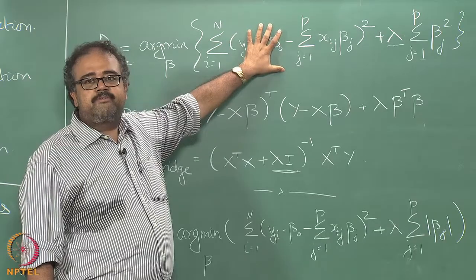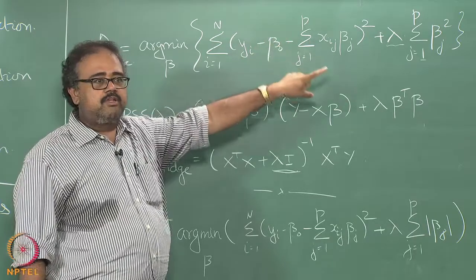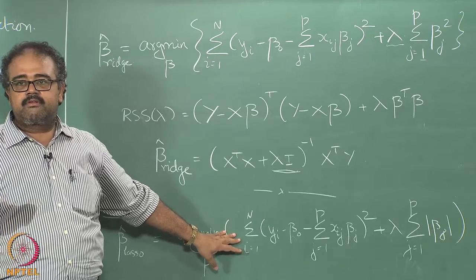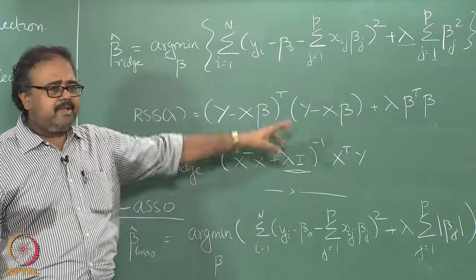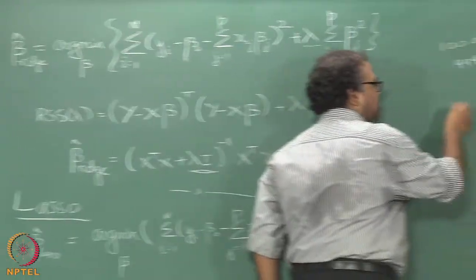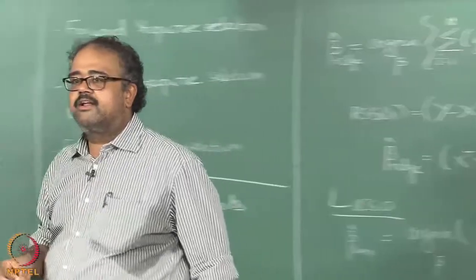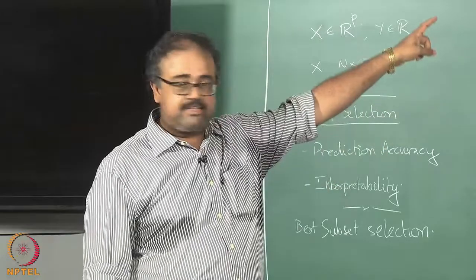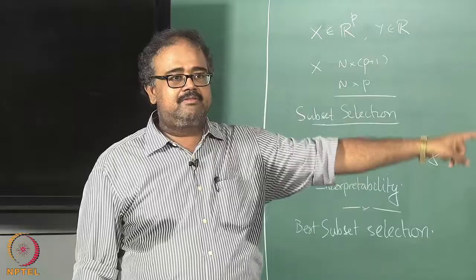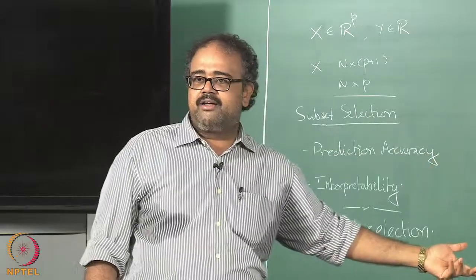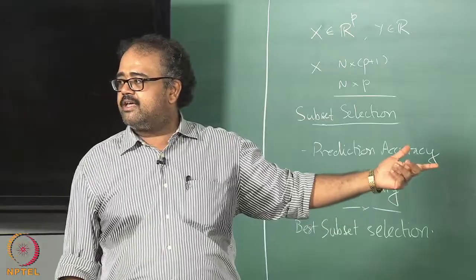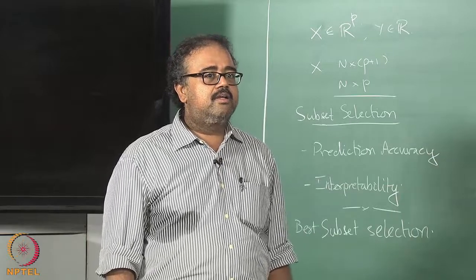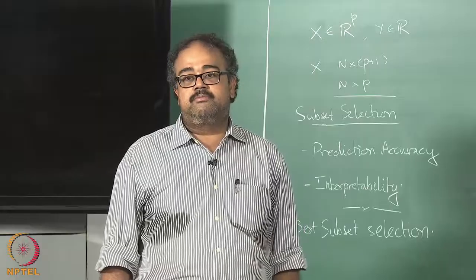Which one would Lasso prefer to reduce, and which one would Ridge regression prefer? Ridge would prefer to reduce 1000 to 999 because that causes a much larger reduction in the squared penalty. Lasso? It doesn't matter — either one gives the same absolute reduction. The take-home message: Lasso is more likely to drive coefficients to 0 than Ridge.